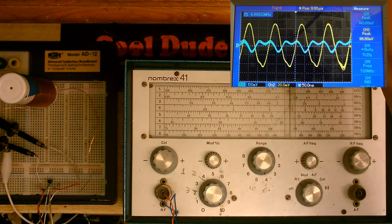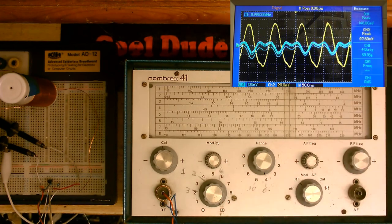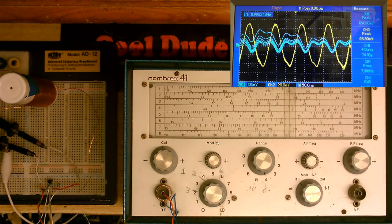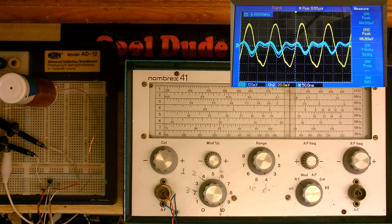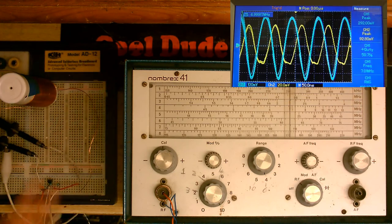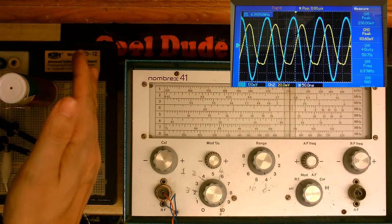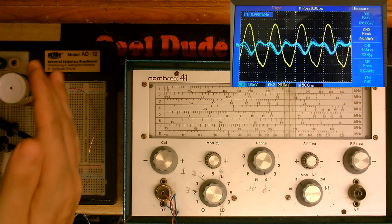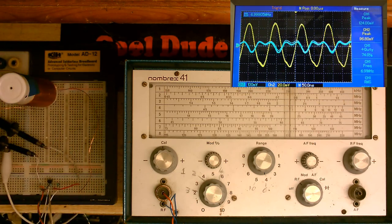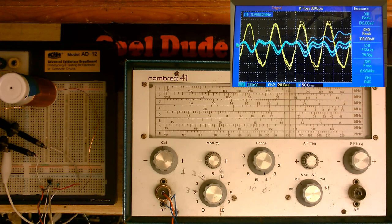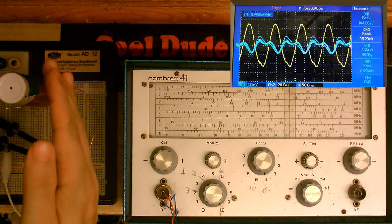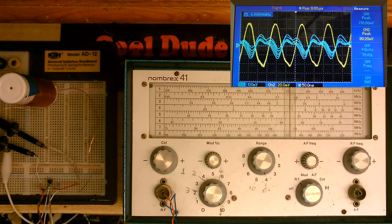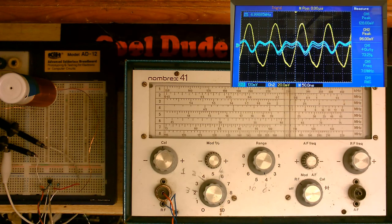Now if I put my hand near this coil, as I put my hand near the coil you can see the amplitude increases. Just that tiny little amount of capacitance between my hand and the coil, that's just enough to detune it.